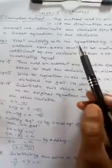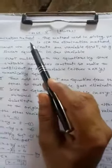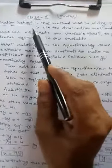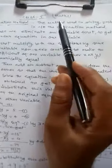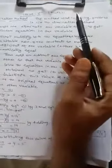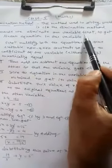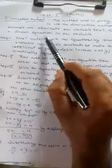Let us start our new topic: the elimination method. In a pair of linear equations we have two variables, so we will try to eliminate any one variable — either X or Y. This method is known as the elimination method because we eliminate one variable first to get a linear equation in one variable.